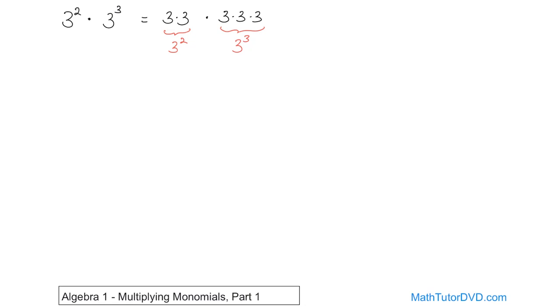So when we write something down like 3 squared times 3 cubed, this is what's really happening. It's really 3 times 3 times 3 times 3 times 3. That's what we're really doing, but we write everything down as exponents to save space.